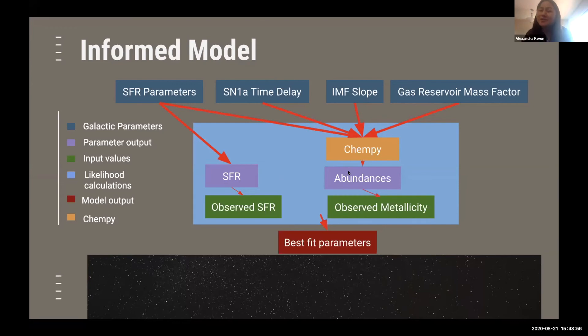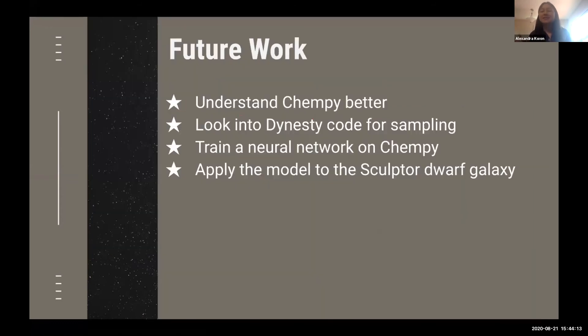While this model is a lot more complicated than our first model, it actually gives us more information about the galaxy. Not only do we get the chemical evolution, but we also can infer overarching galaxy parameters that really describe how the entire galaxy has evolved.